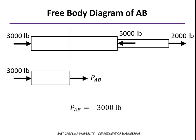A negative value means a compressive force, and along with that, a negative change in length — a shortening of that segment. A positive value means tension or an elongation of that segment. So the stress resultant within AB is minus 3,000 pounds.